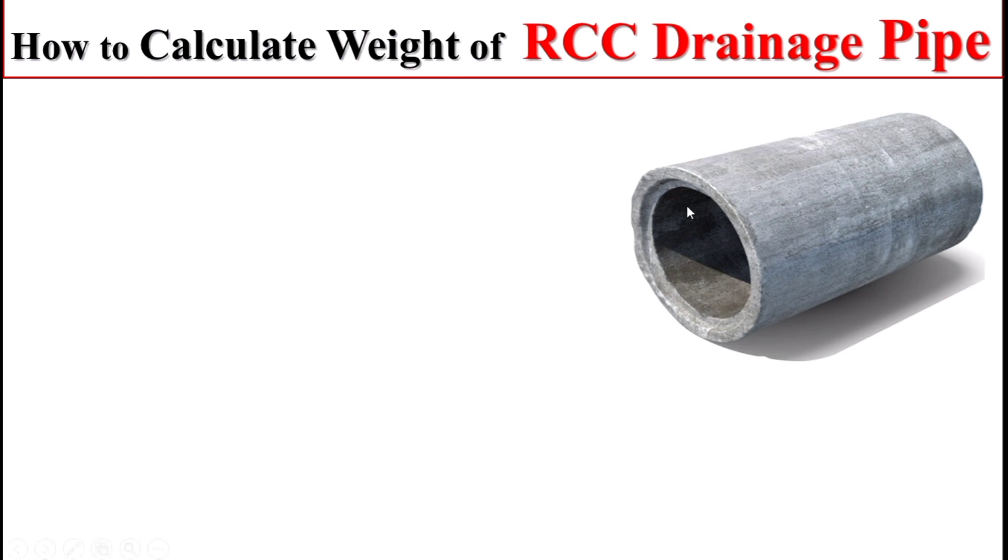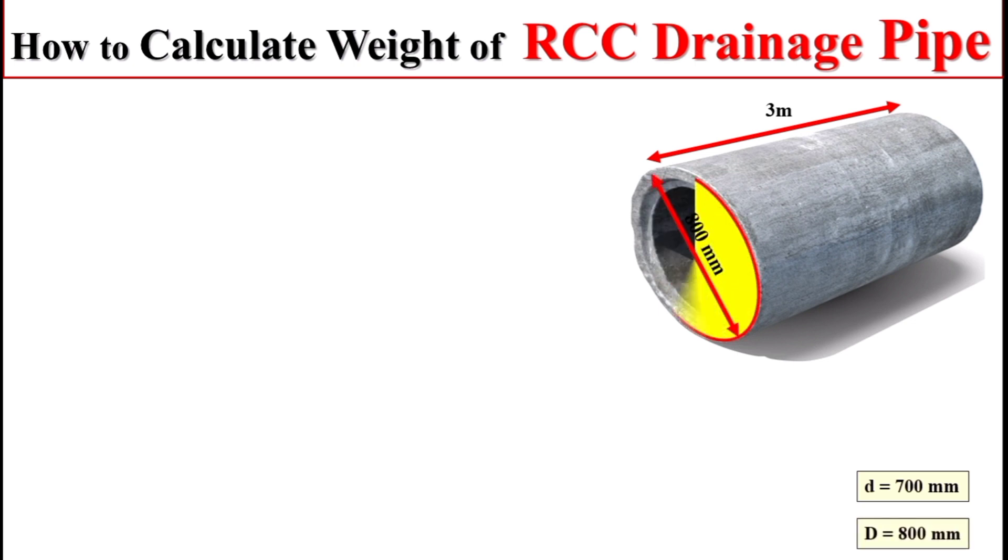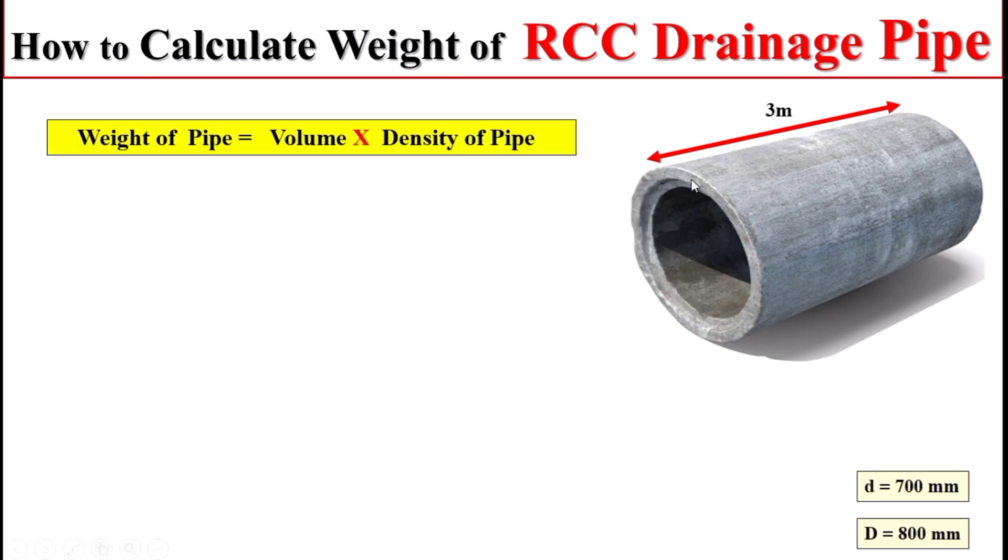So dear students, let's suppose we have an RCC drainage pipe and the length of the pipe is 3 meters. The internal diameter of this drainage pipe is 700 millimeters and the external diameter of this pipe is 800 millimeters.